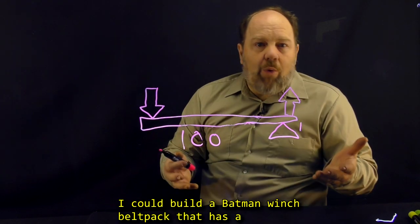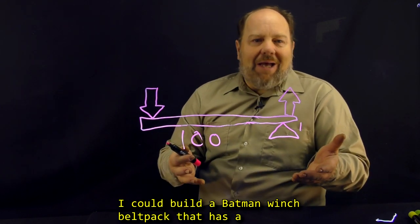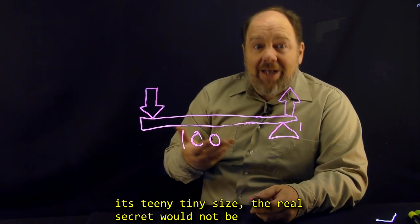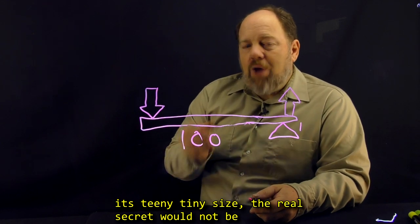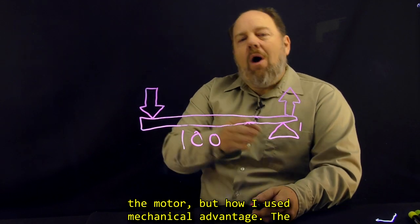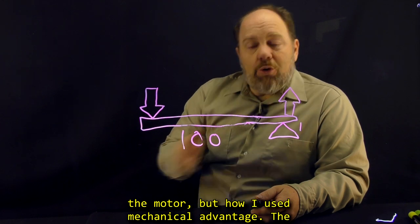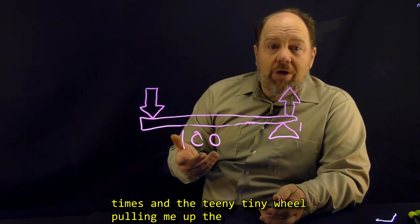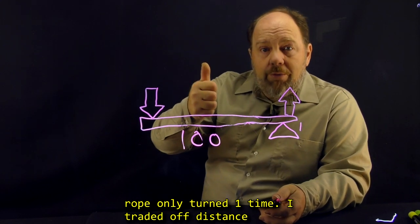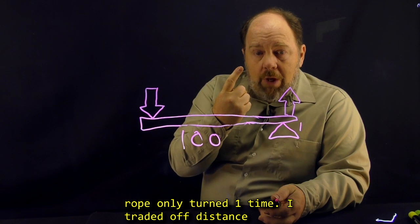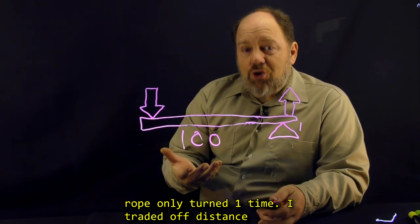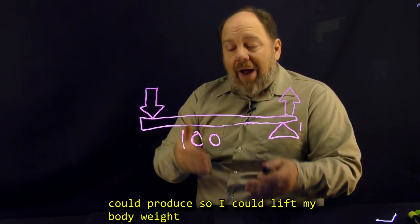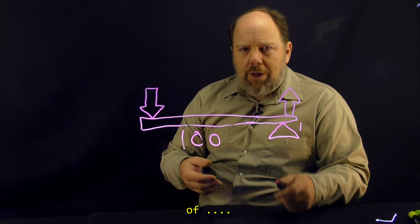I could build a Batman winch belt pack that has a tiny DC motor that while it does pack a punch for its teeny tiny size, the real secret would not be the motor, but how I used the mechanical advantage. The wheel on the shaft of the motor might turn 10,000 times, and the teeny tiny wheel pulling me up on the rope only turned one time. I traded off distance traveled to amplify the teeny tiny force the motor could produce so I could lift my body weight of 100 kg.